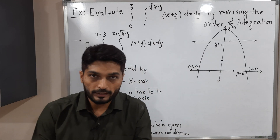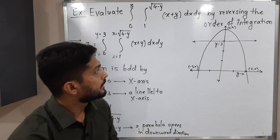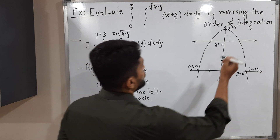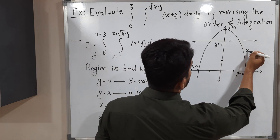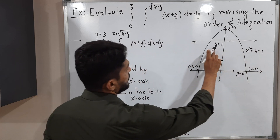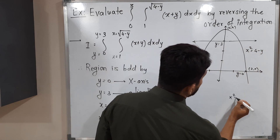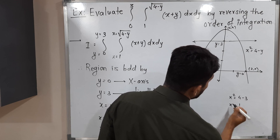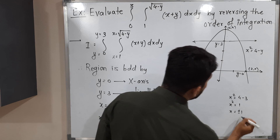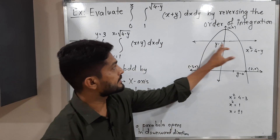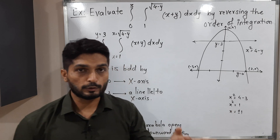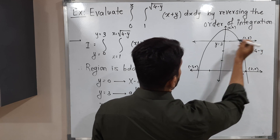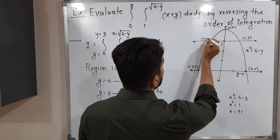The technique is to substitute one equation into the other. Putting y equals 3 into x squared equals 4 minus y gives x squared equals 4 minus 3 equals 1, so x equals plus or minus 1. With y equals 3, we get two intersection points: (1, 3) and (−1, 3).